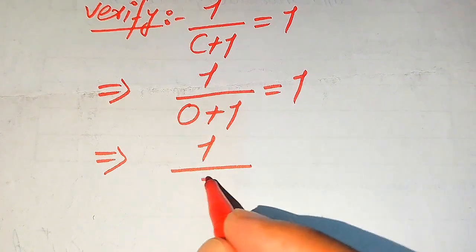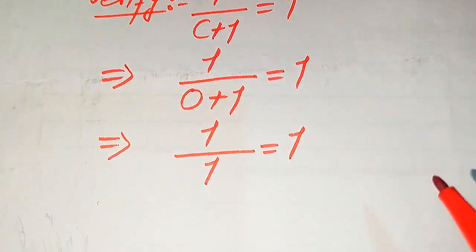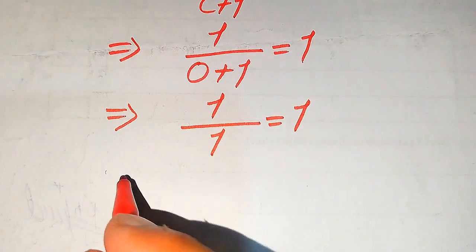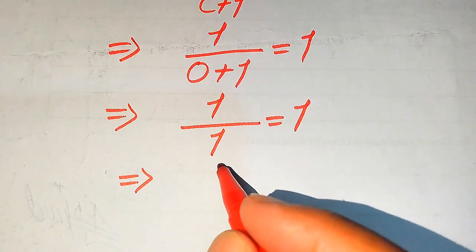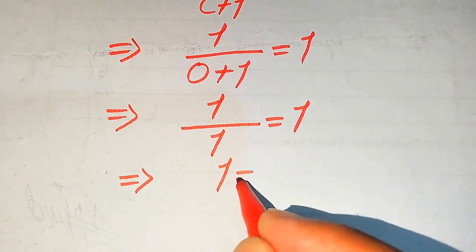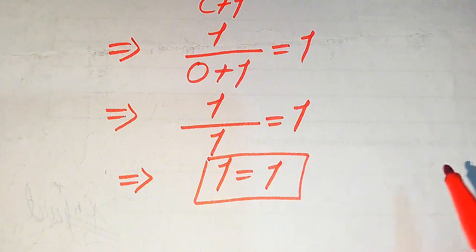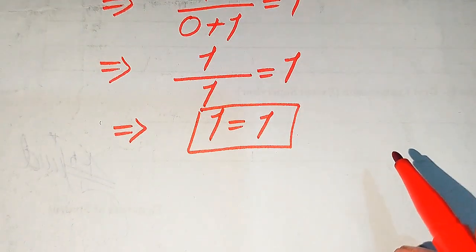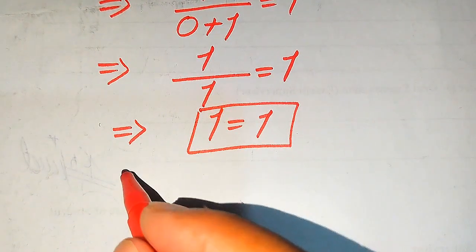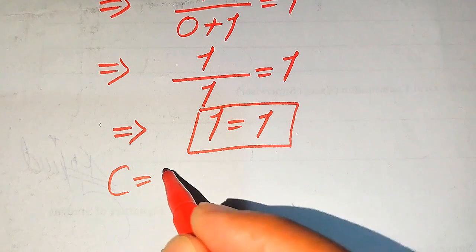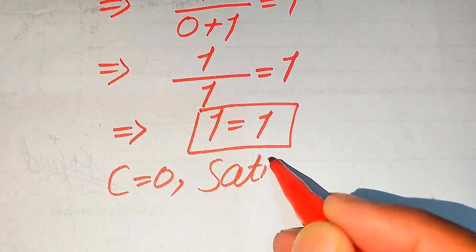Simplifying, we get 1 divided by 1 equals 1, and we know that 1 divided by 1 equals 1. So the left hand side equals the right hand side. This shows that c equals 0 satisfies our given equation, so c equals 0 is satisfied.